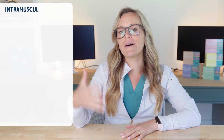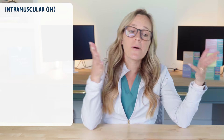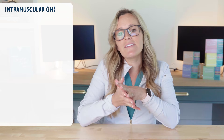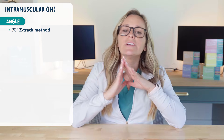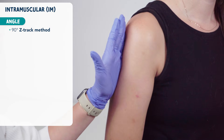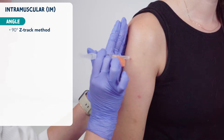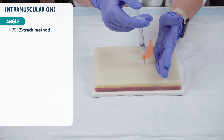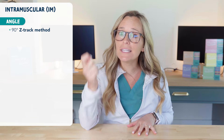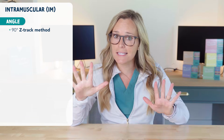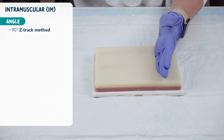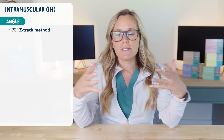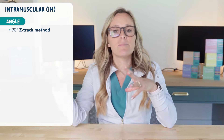Next we have the intramuscular route. This is given into the muscle layer at a 90 degree angle using the Z-Track method. The Z-Track method is when you take your non-dominant hand and laterally pull back the overlying skin and subcutaneous tissue one to one and a half inches and hold. After cleaning the injection site, inject the needle into the muscle and keep the needle inserted for 10 seconds to allow for even dispersion of the medication. Then remove the needle and release the skin. This allows medication to be trapped inside and prevent it from leaking back out.